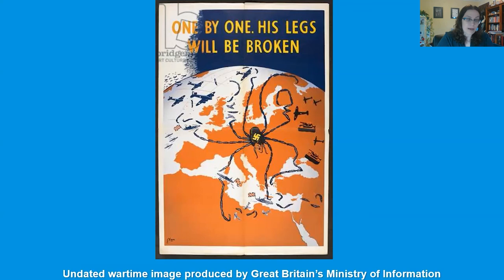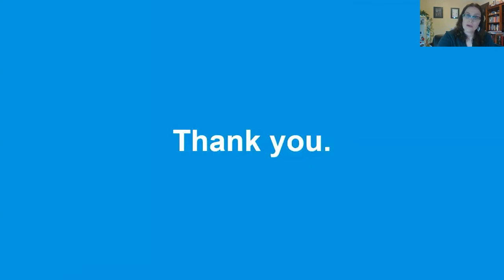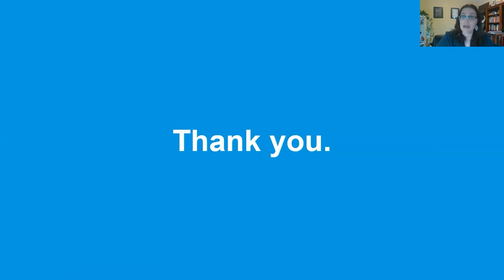In 1945, the Nazi imperialist venture in Europe — the creation of this race-based order — came to an end. It left in its wake tremendous death and destruction that would shape European history and society for many years to come. Thank you for attending this talk offered by AP Daily. I wish you all the best with the rest of your AP European History course, with the exam in May, and with your future studies of history. Thank you.